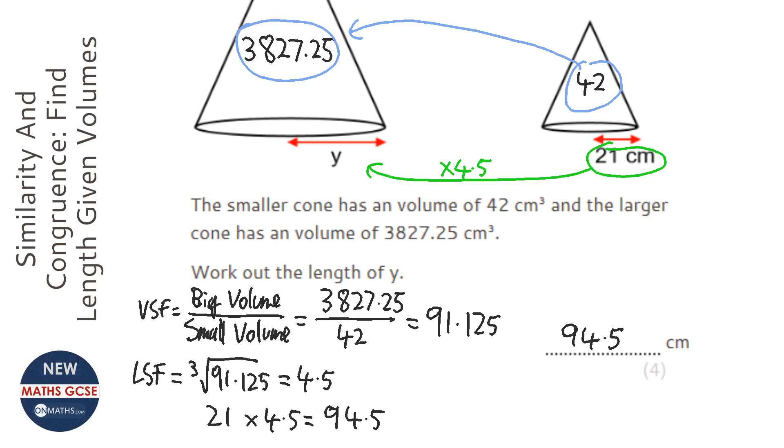Well, linear - like lines - don't grow as quick as areas, which don't grow as quick as volume. So volume will grow very quickly, but the lines on the cone won't grow at the same rate.